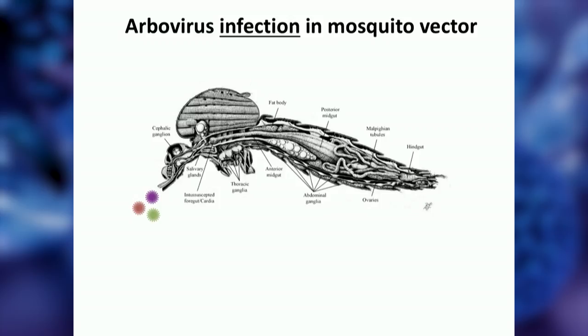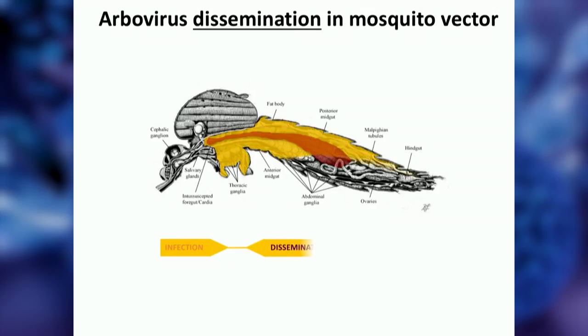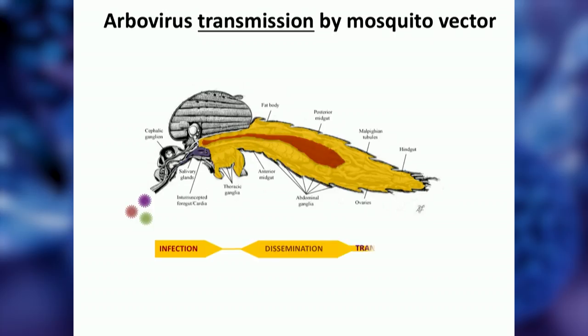Here is a cross-section of a mosquito. She ingests an infectious blood meal into the mosquito stomach or midgut. The virus must infect the midgut epithelium, then disseminate to the other side of the midgut, so it can infect secondary target organs — which in a transmission-competent mosquito includes the salivary glands. The virus is then excreted into saliva, so that when the mosquito refeeds, she transmits into a new host.